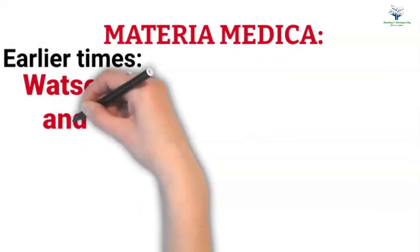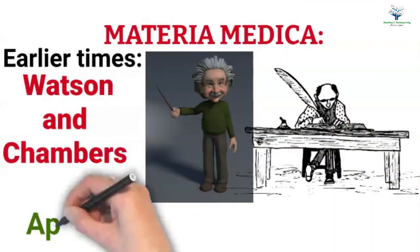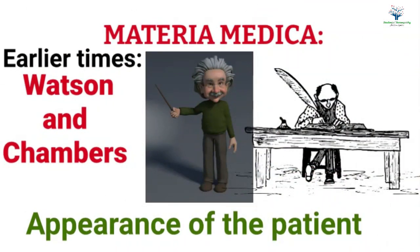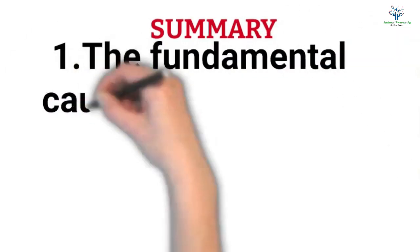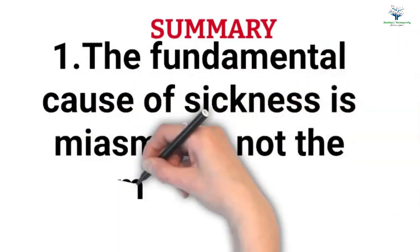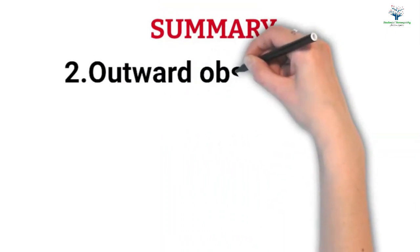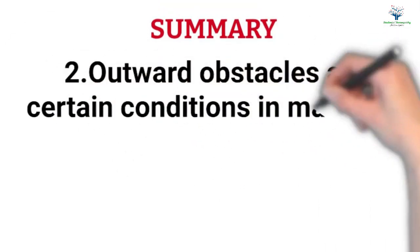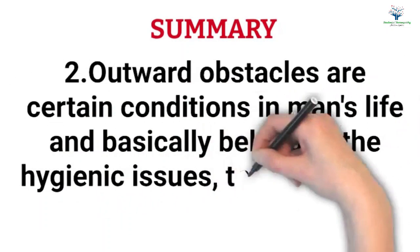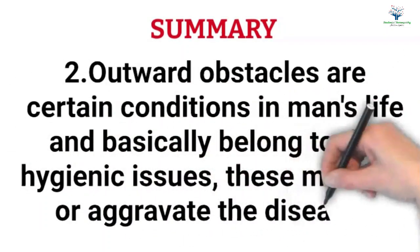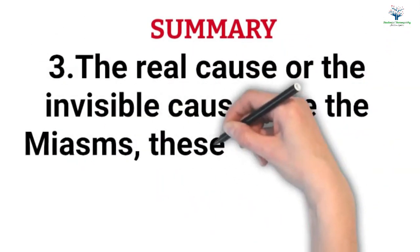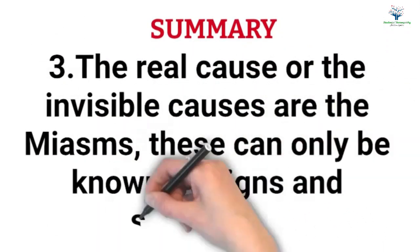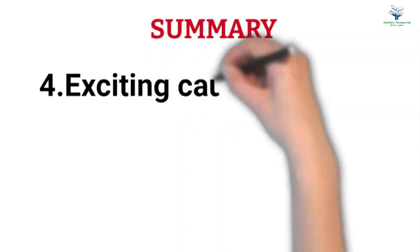Now summarizing the things once again, the fundamental cause of sickness is miasm but not the material or pathological changes. Outward obstacles are certain conditions in man's life and basically belong to the hygienic issues. These maintain or aggravate the disease. The real cause or the invisible causes are the miasms. This can only be known by signs and symptoms.